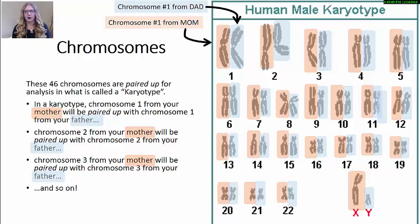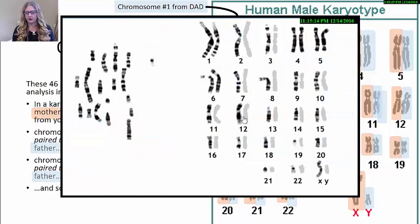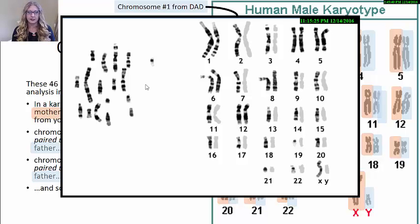I hope you enjoyed that short clip. Now let's talk a little bit more about our chromosomes and what they look like when they are in their condensed state. Here we are looking at a male human karyotype. Remember that there are 46 chromosomes total in your cells — 23 from one parent and 23 from the other. In a karyotype, we pair up the number 1 chromosome from mom with the number 1 chromosome from dad, and then do the same with chromosomes 2, 3, 4, all the way up to chromosome number 23.